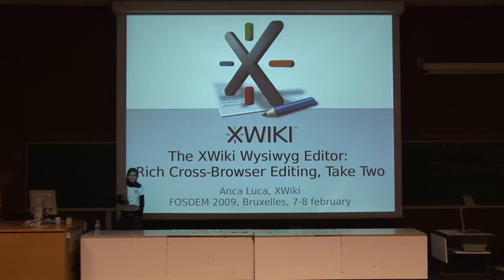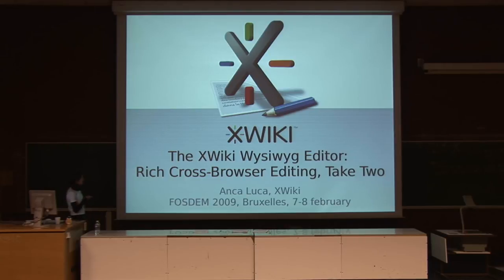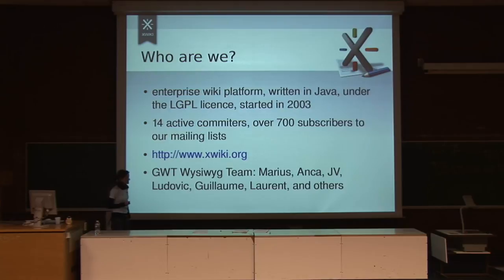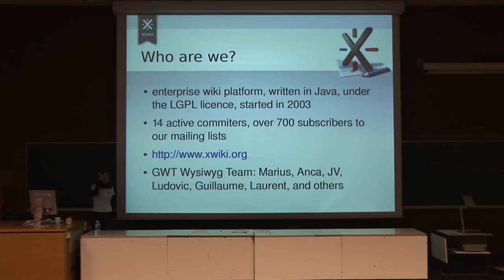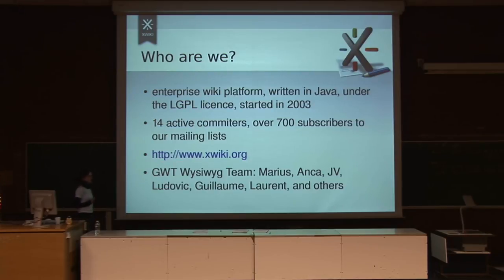Cool. How many of you have played with XWiki up to now? Almost as much. For the rest of you, XWiki is a leading enterprise Wiki platform. It's written in Java, is distributed under the LGPL license, and it has been started in 2003 and we've been coding on it since. The community is 14 active committers, there's more of them but sleeping, over 700 subscribers to our mailing lists, and over 10,000 downloads per month. There's more information there about us, you can go and check it out.